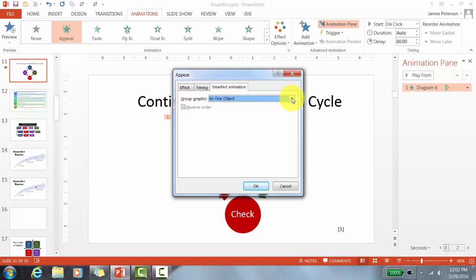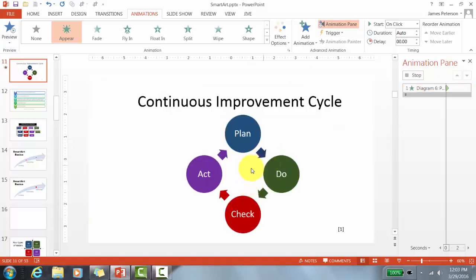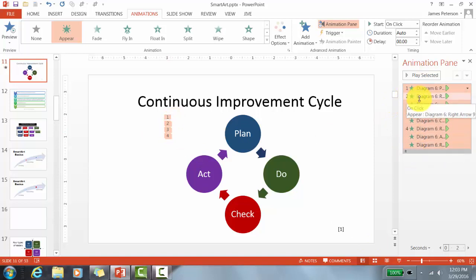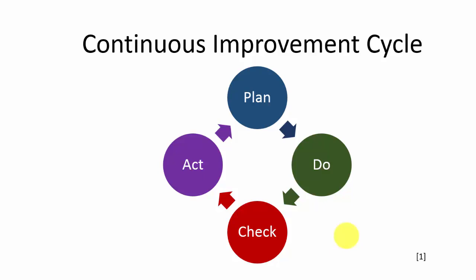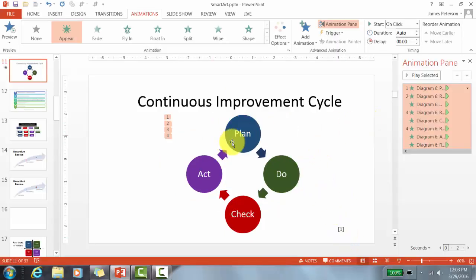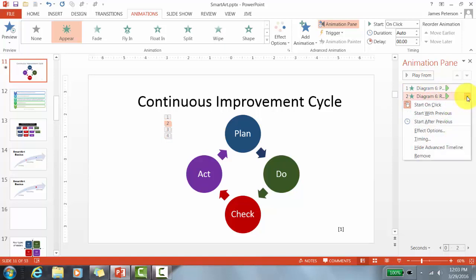To make elements appear individually, click the triangle in the Animation Pane, go to Effect Options, and find the 'SmartArt Animation' tab. You have options: as one object, all at once, or one by one. I'll choose 'One by One' and click OK. This SmartArt has eight objects with four mouse clicks and eight animations. Now I can see where the mouse clicks are in the animation sequence.